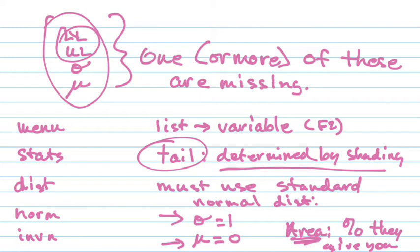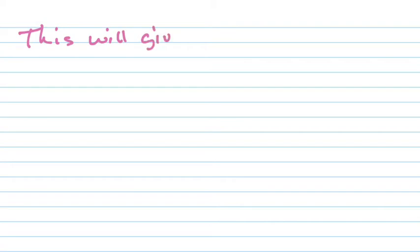Once you do that, you're not going to get your final answer directly. You're going to get the value you need in order to get your answer. The calculator keystrokes will give you a Z score.